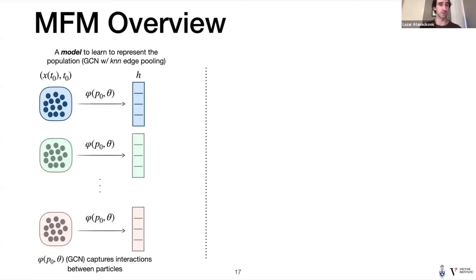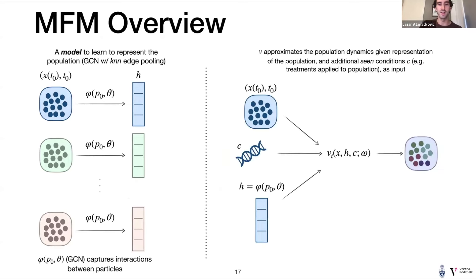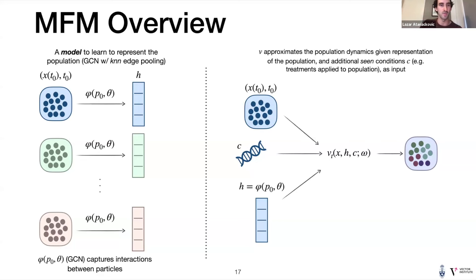A high-level overview of the model: we have a population embedding module for different entire populations — denoted by different colors — and we can condition on this entire population. We can also add any other conditioning C, which in our case is the treatment. We see the same treatments across different patients and populations, so we can additionally capture the conditional response to these treatments while conditioning on the entire population. Going back to the Wasserstein manifold framing: we're learning a vector field on this manifold per treatment. For any fixed treatment C, it just becomes conditioned on H — conditioned on where we are starting from on this manifold.